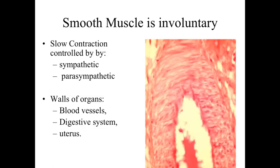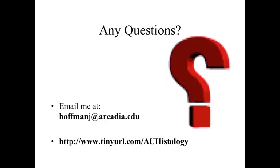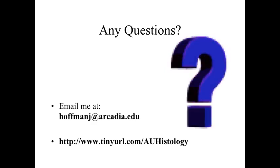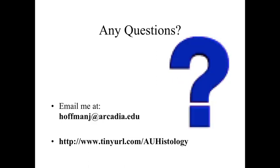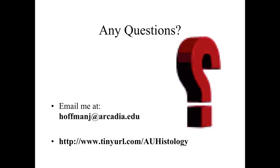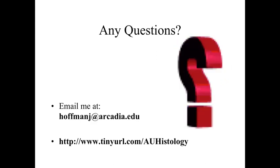Smooth muscle, like cardiac muscle, is involuntary. It contracts relatively slowly and is controlled by both sympathetic and parasympathetic innervation. Smooth muscle is found in a variety of locations — the walls of the digestive system, the uterus, and the walls of blood vessels. Contraction of smooth muscle regulates the walls of a variety of organs within the body. This finishes our series of lectures on muscle, and we're going to start looking into different systems within the body in the next series of lectures.